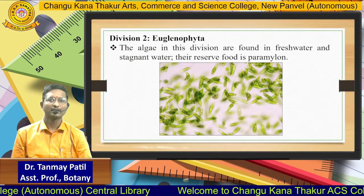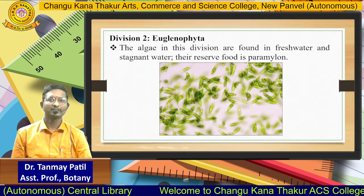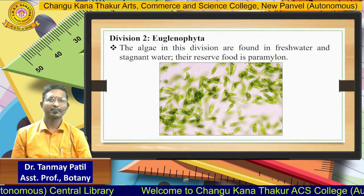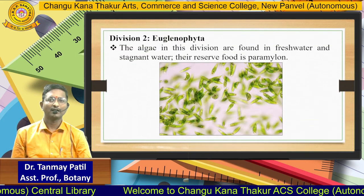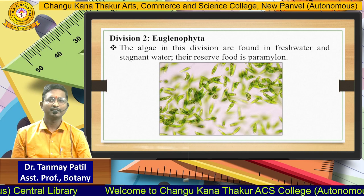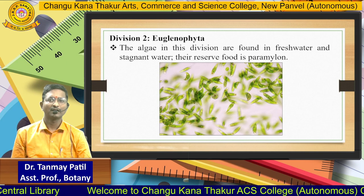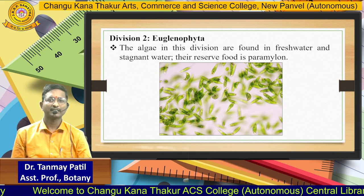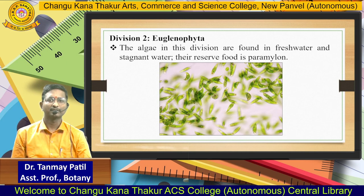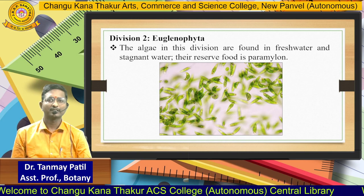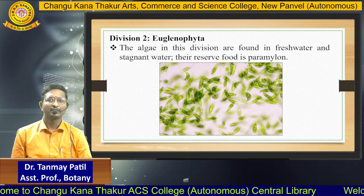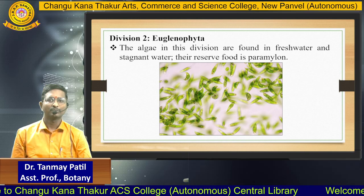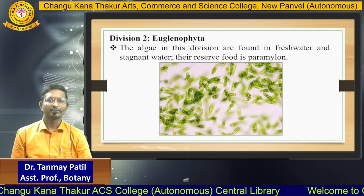The next division is Euglenophyta. The algae in this division are found in freshwater and stagnant water. Their reserve food is paramylon.